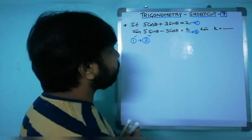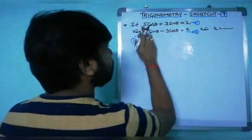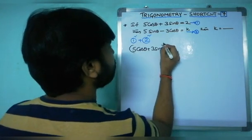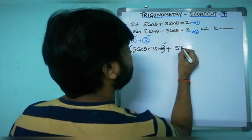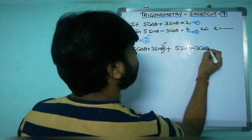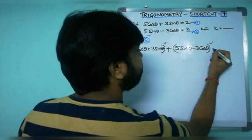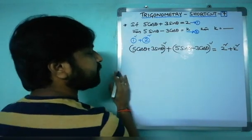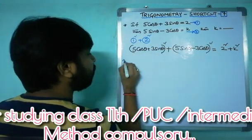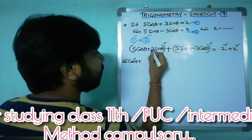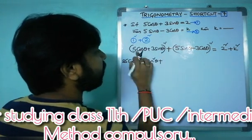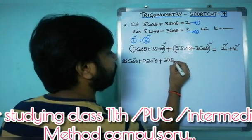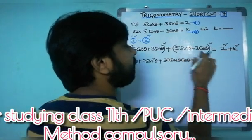Applying 1² + 2²: equation 1 squared is (5 cos θ + 3 sin θ)² and equation 2 squared is (5 sin θ − 3 cos θ)². The right-hand side becomes 2² + k². Expanding using (a + b)² = a² + 2ab + b²: the first square gives 25 cos²θ + 9 sin²θ + 30 sin θ cos θ.